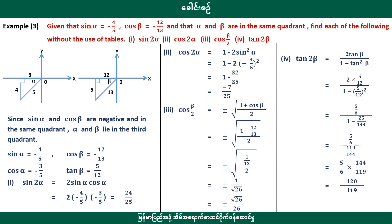This method looks like sine alpha minus 4.5, cosine beta minus 12.5. The equation is in the same direction — sign the same time and cost is the same time. Find each of the following without the user table.